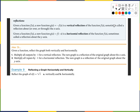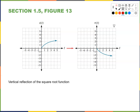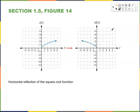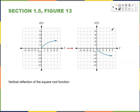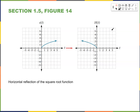Example: reflect the graph of s of t equals the square root of t vertically and horizontally. The vertical reflection reflects the square root function about the x-axis. The horizontal reflection reflects it about the y-axis. Notice the visual difference between a vertical reflection and a horizontal reflection.